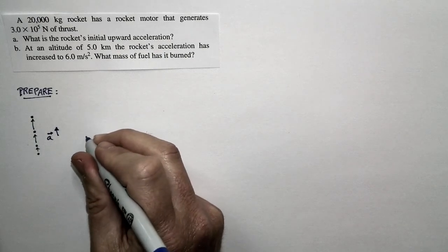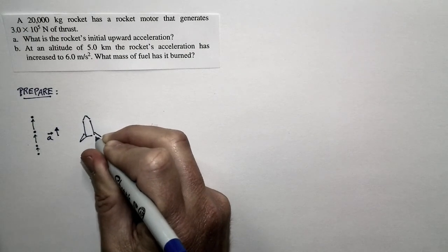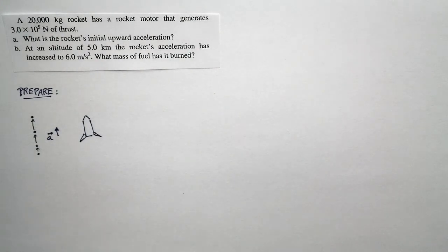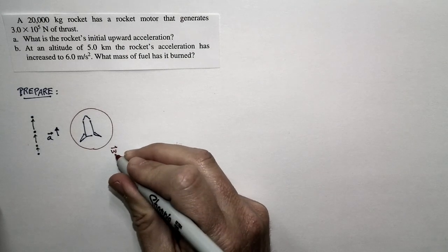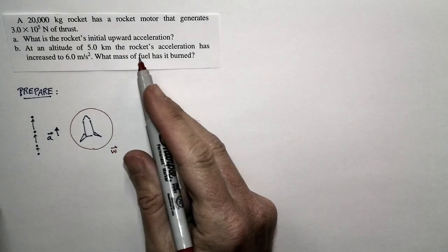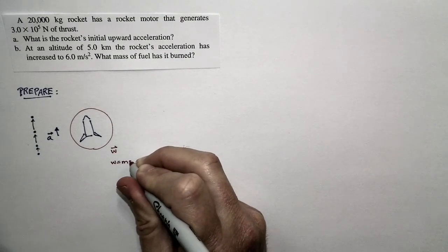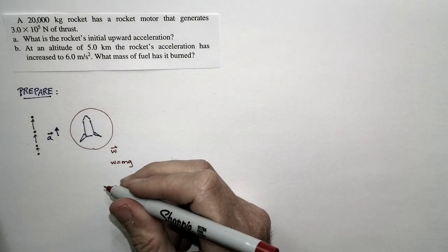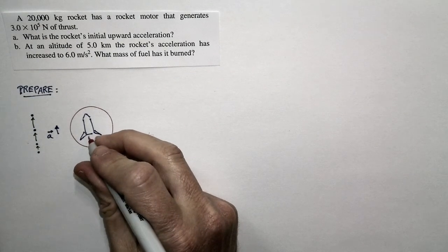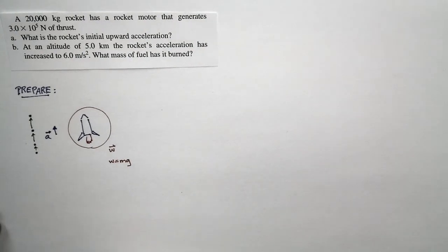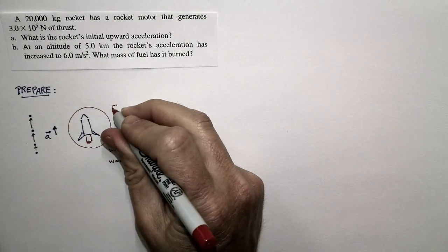Now let's look at the forces that act on the rocket. There are really only two. We're going to consider the rocket in isolation from everything else — nothing touches it. There's a downward weight force near the surface of the Earth, with magnitude equal to M times G. But there's also a thrust force. The rocket is burning fuel and expelling hot gases, so there's an upward thrust force that acts on the rocket.